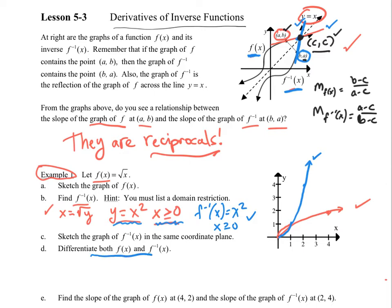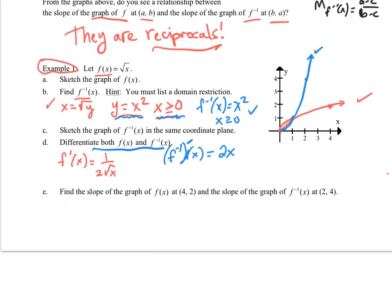Now differentiate both these and let's look at what happens with those derivatives. So for f prime, I get one over two square root of x because that comes from up here. And then for f inverse, I end up with just 2x because I'm working right here. Now part e is pretty key. Notice when I say f of x, I'm dealing with the point (4,2). When I talk about f inverse, I'm talking about the point (2,4).